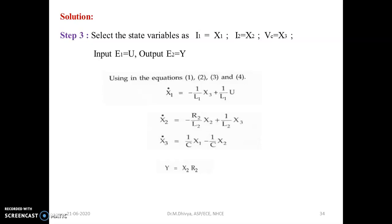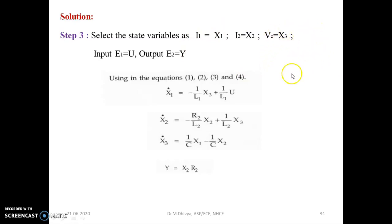There are two physical variables — current and voltage — which vary with time. Resistor, inductor, and capacitor have values of resistance, inductance, and capacitance respectively; these are constants and do not vary with time. So the physical variables, current and voltage, are chosen as the state variables: current I1 is the first state, current I2 is the second state, and the voltage across the capacitor is the third state variable.